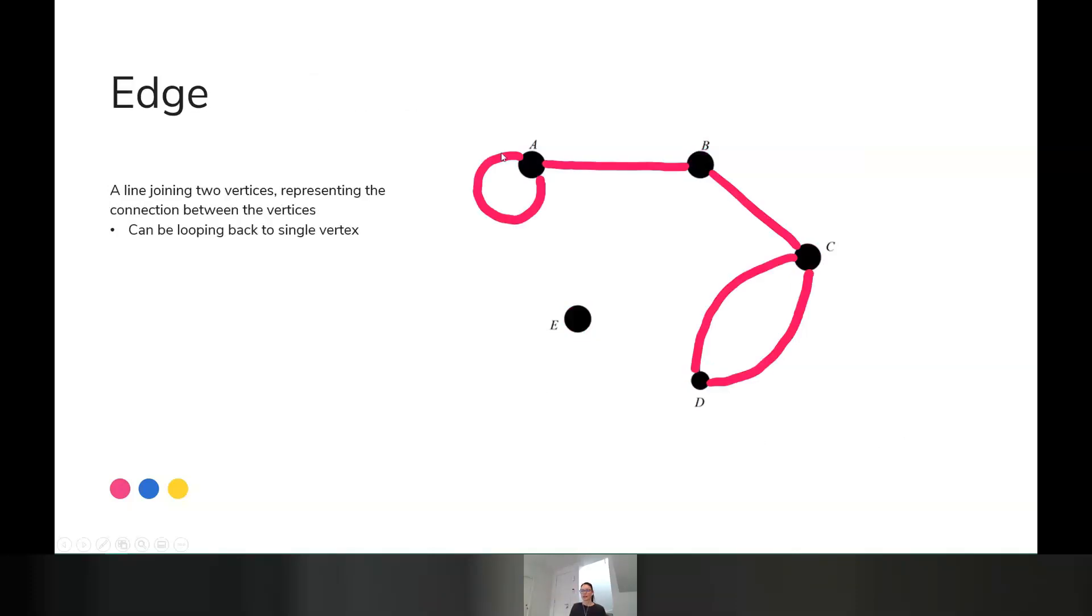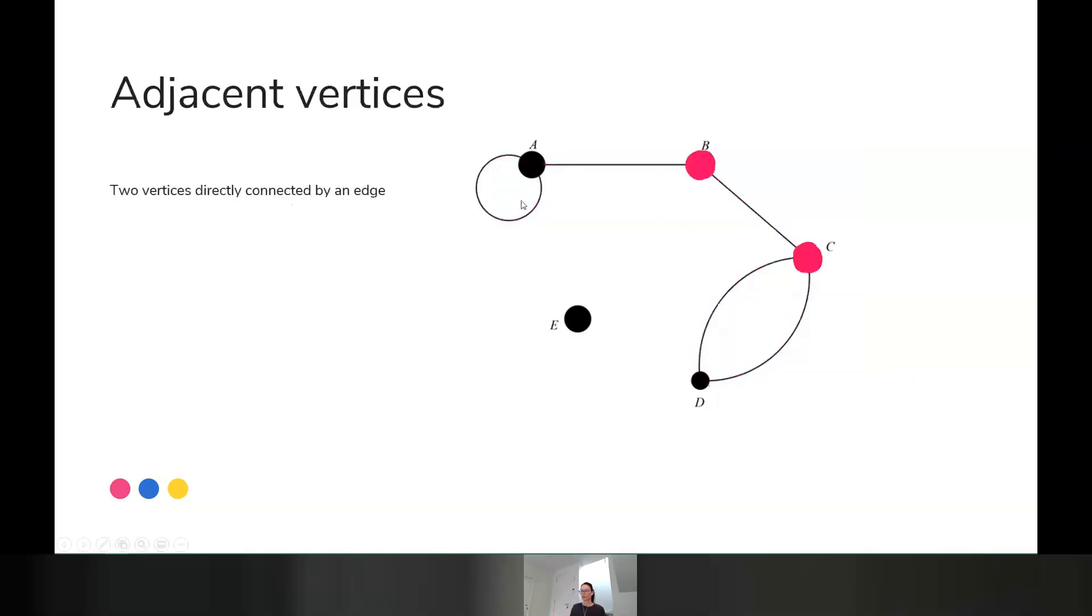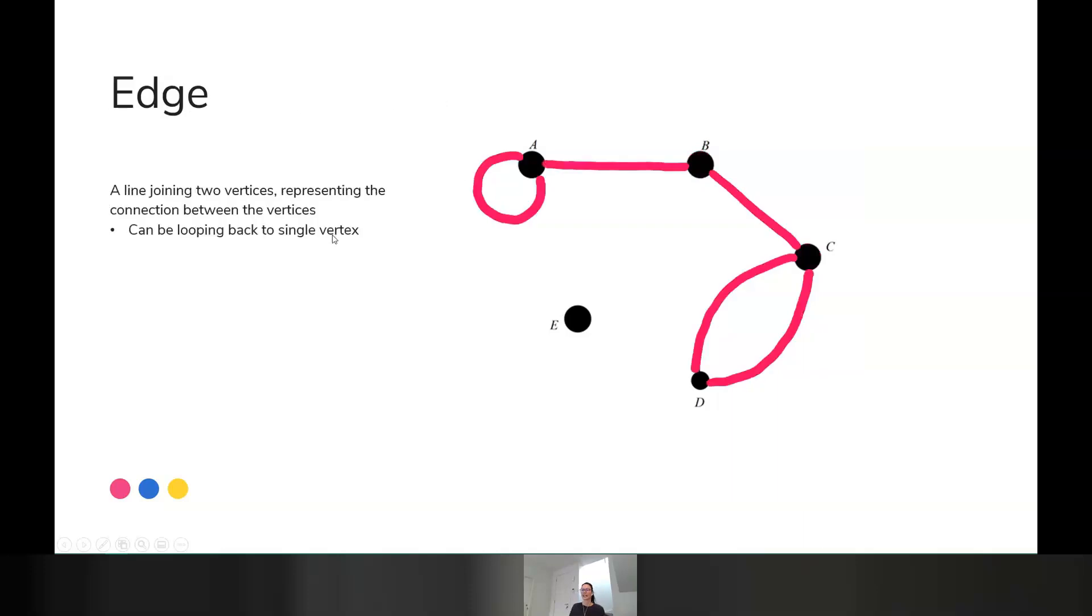The edges are the lines joining the vertex. In this particular example, we've got a loop here, which I'll talk about in a sec. And then one, two, three, four other - five edges in total in that graph. So it can be a loop coming back to the same place or it can be connecting one vertex to another. And that's those one step direct connections.